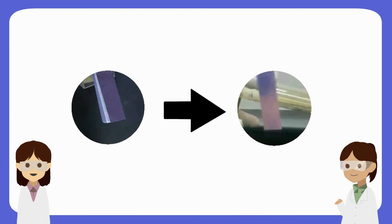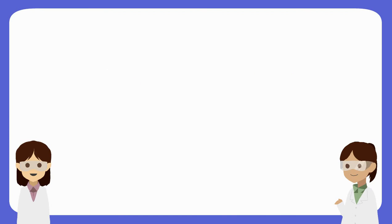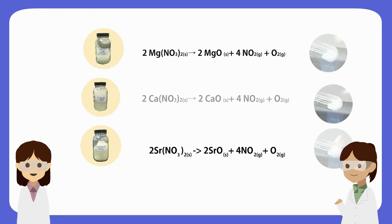The color of the blue litmus paper changes from blue to red, indicating that the substance formed is in acidic condition. The white solids formed from the decomposition of magnesium nitrate, calcium nitrate, and strontium nitrate are magnesium oxide, calcium oxide, and strontium oxide respectively.